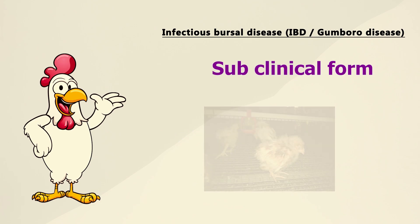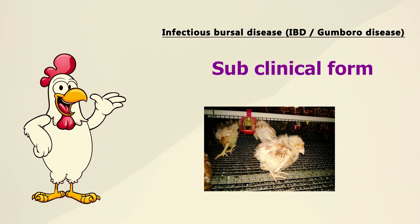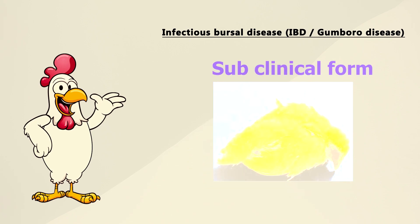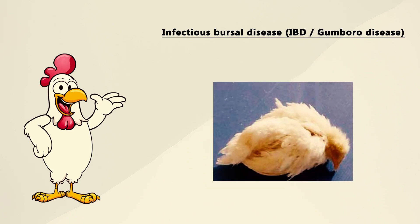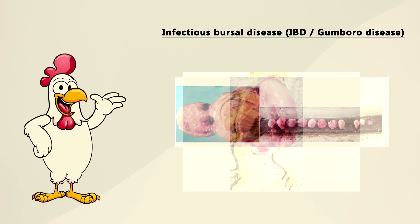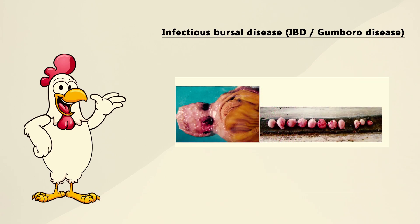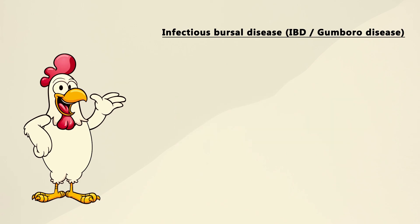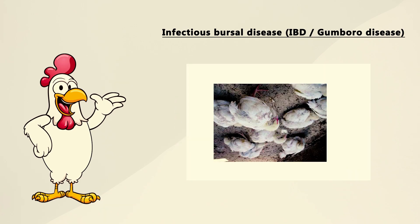Usually the disease affects chicks under three weeks of age. Affected chicks will have severe immunity suppression. This disease particularly destroys the bursa fabricius completely, which means the immunity power of those chicks will be reduced, and other bacterial diseases will dominate.